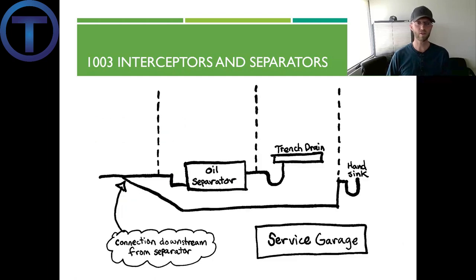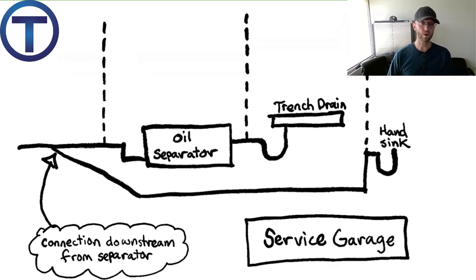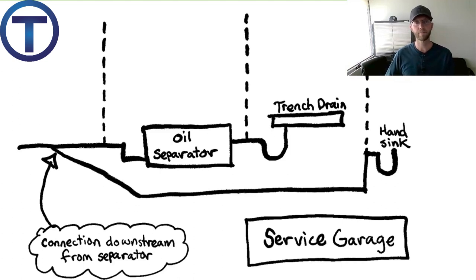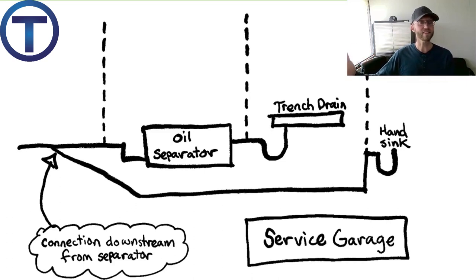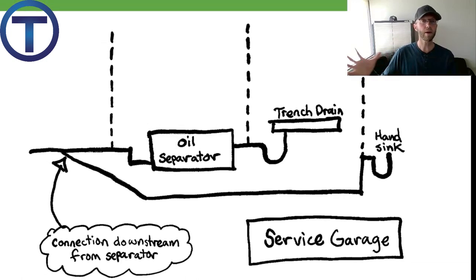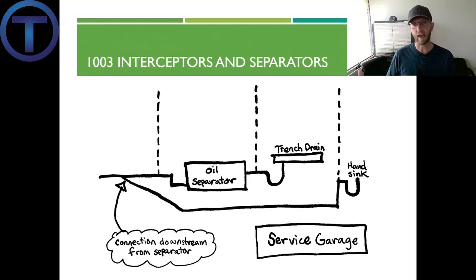Here's an illustration of that. We have a trench drain and an oil separator in a service garage. In the same garage, there's also a sink for employees to wash their hands. The trench drain may receive oil or other liquids that need to be separated before going down the drain, but the sink is just soapy water. So it should be piped so it does not pass through the oil separator — we don't need to put any more waste through there than absolutely necessary.